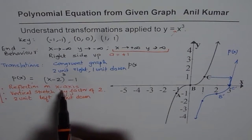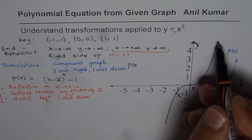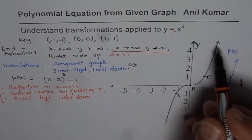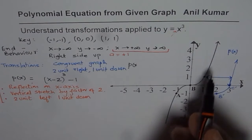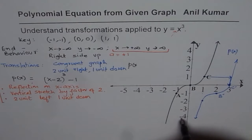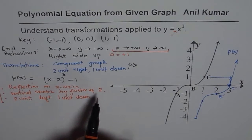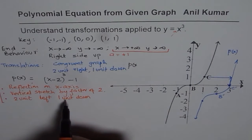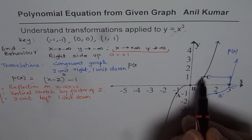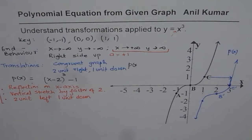When you reflect on the x-axis, the right side which was going up now comes downward — the orientation changes, so right side will be down. When you apply a vertical stretch by a factor of 2, these y values get multiplied by 2. And 2 units left and 1 unit down is similar to the previous translation, except moving left and then down.